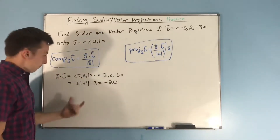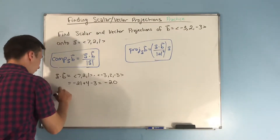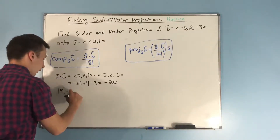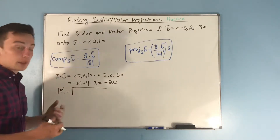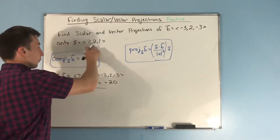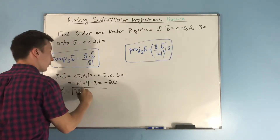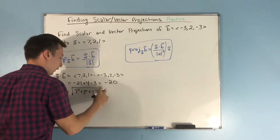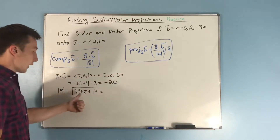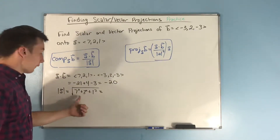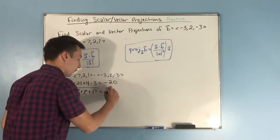Now we just have to find the magnitude of A, which is equal to the square root of the sum of the squares of the components. So we have the square root of seven squared plus two squared plus one squared — that's 49 plus four, which is 53, plus one, giving us 54. So we get √54.